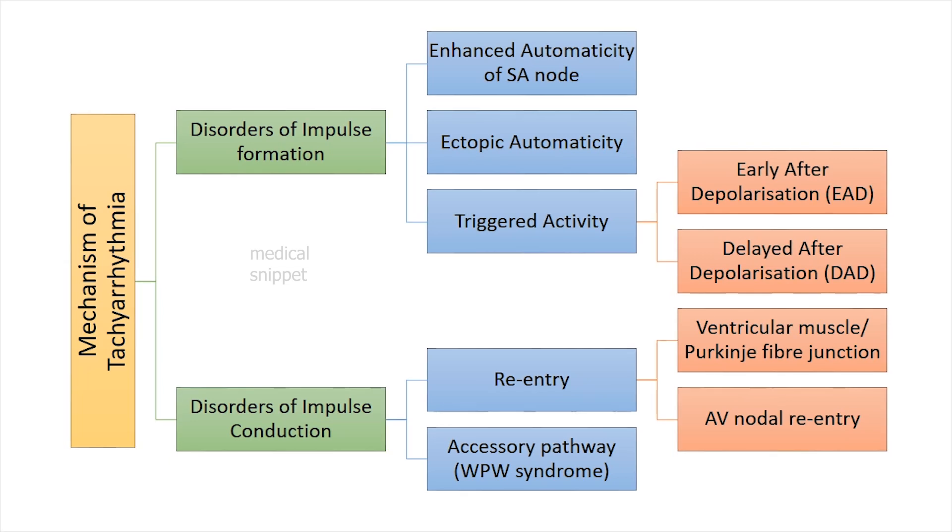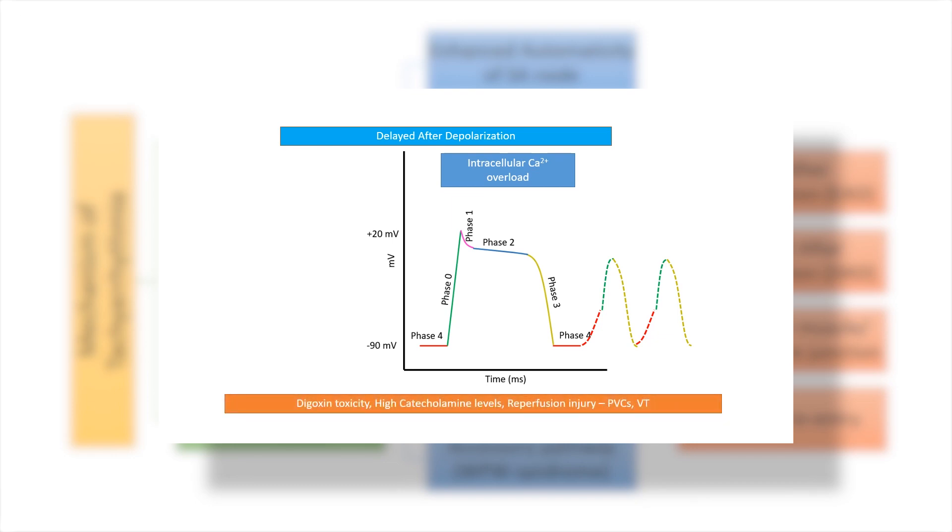Delayed after depolarization occurs during phase 4. It is due to intracellular calcium overload. This can be caused by digoxin toxicity, high catecholamine levels, and reperfusion injury. Delayed after depolarization can cause premature ventricular contractions and ventricular tachycardia.